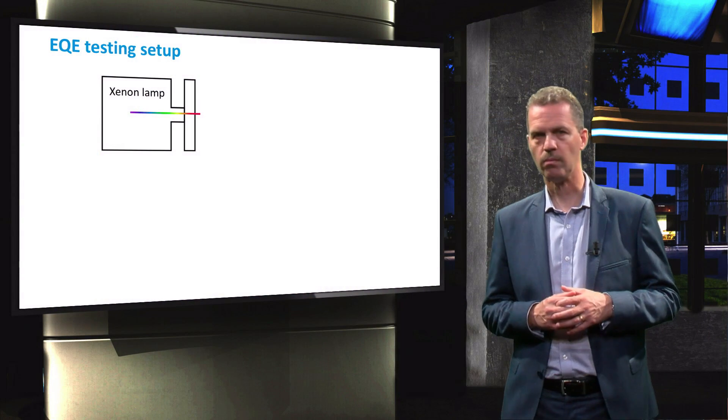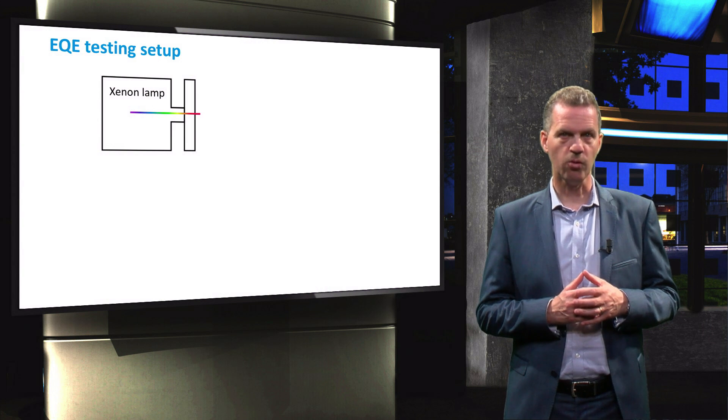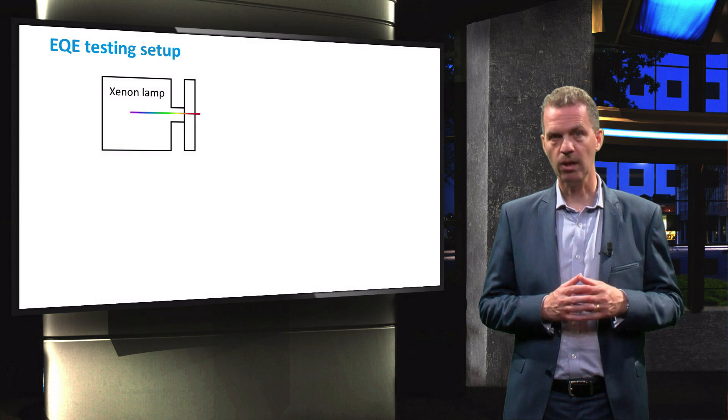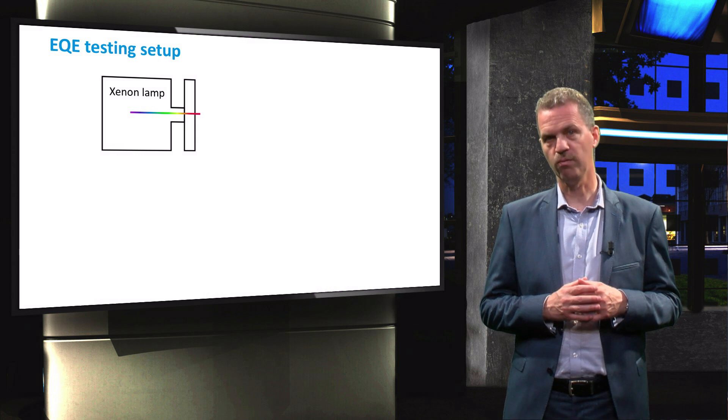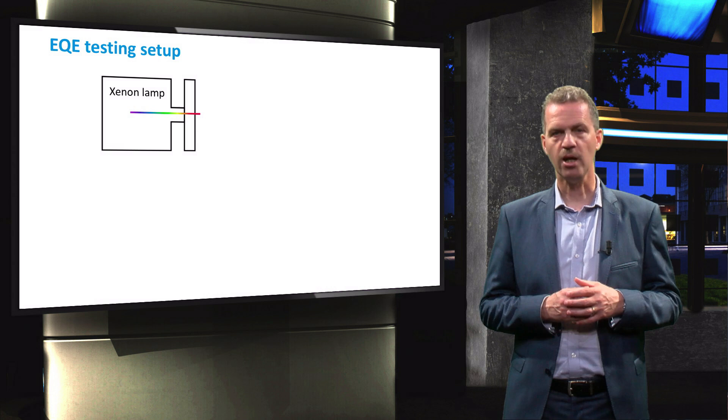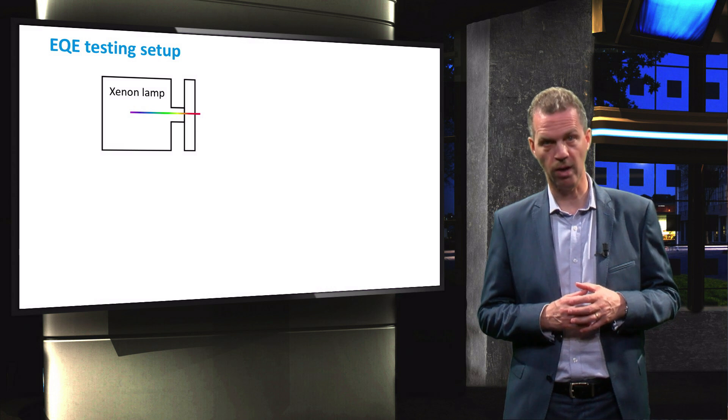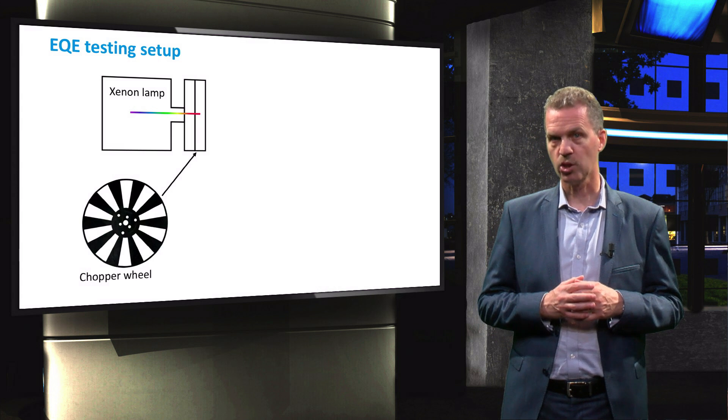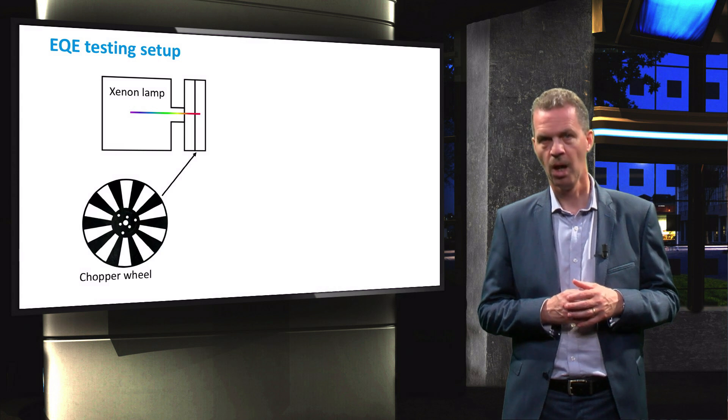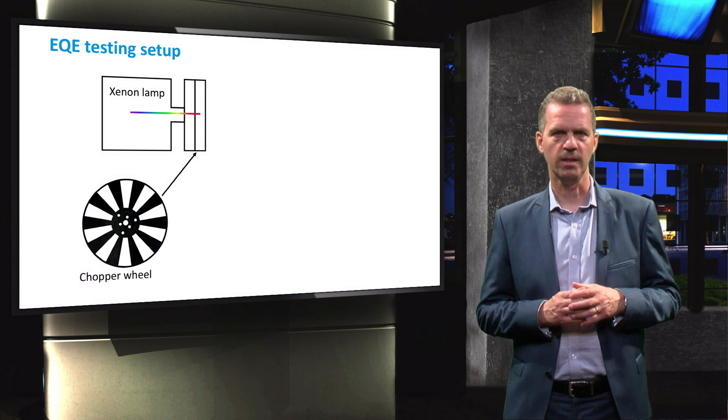Now that we know the purpose of measuring an EQE curve and how it relates to the current generation of a solar cell, we will look at a schematic overview of a typical EQE measurement setup. To start with, the setup should have a light source with a continuous spectrum, such that none of the wavelengths of interest are missing. A xenon lamp has a fairly even spectral distribution and is therefore suitable for this application. The light of the lamp will first pass through a first-order filter, such that higher orders of the short wavelength light will not interfere with longer wavelengths. It will then pass through a chopper wheel that chops the light such that it has an on-off frequency of most commonly 123 hertz. We will explain why this is necessary in a short moment.